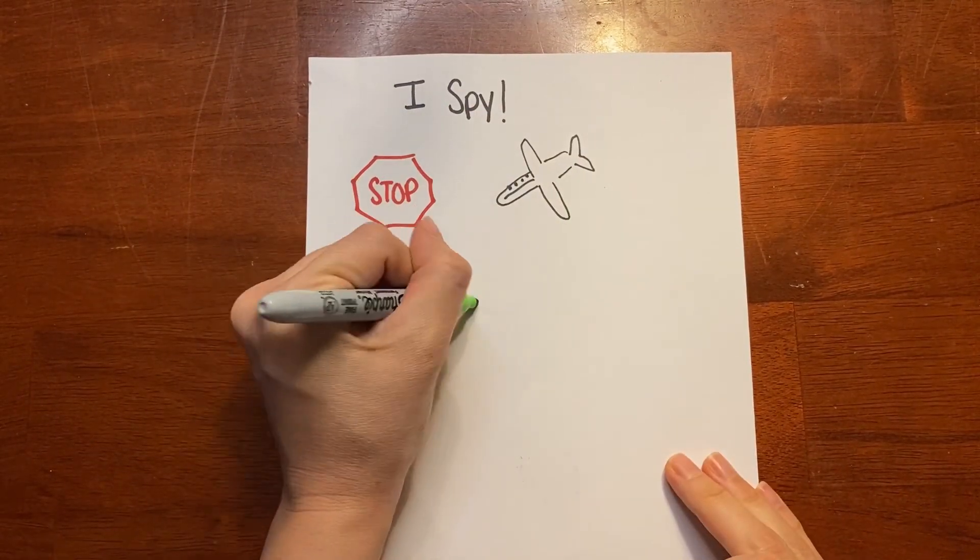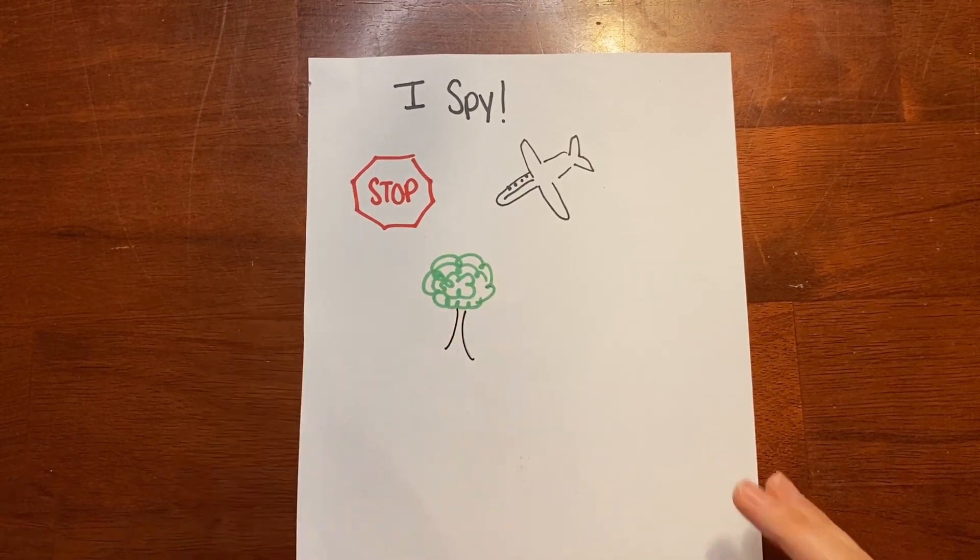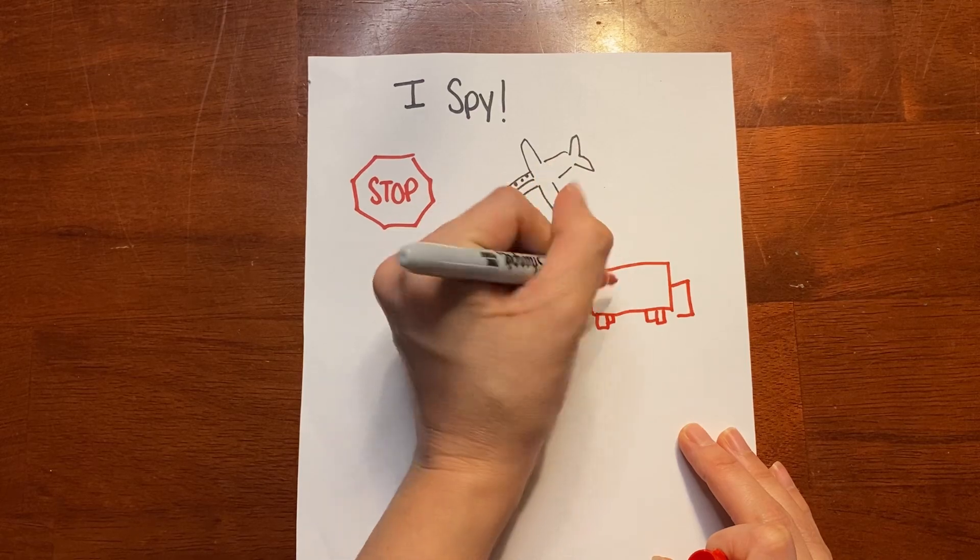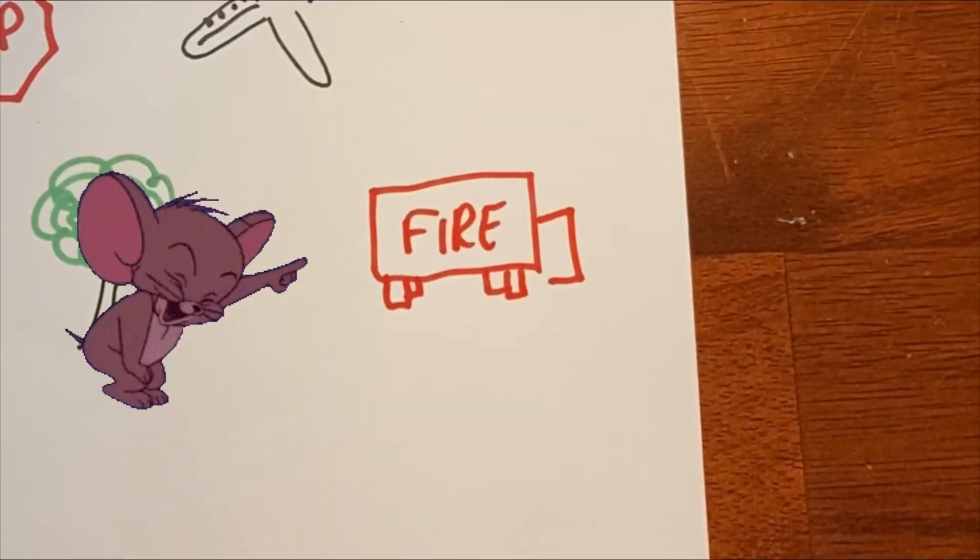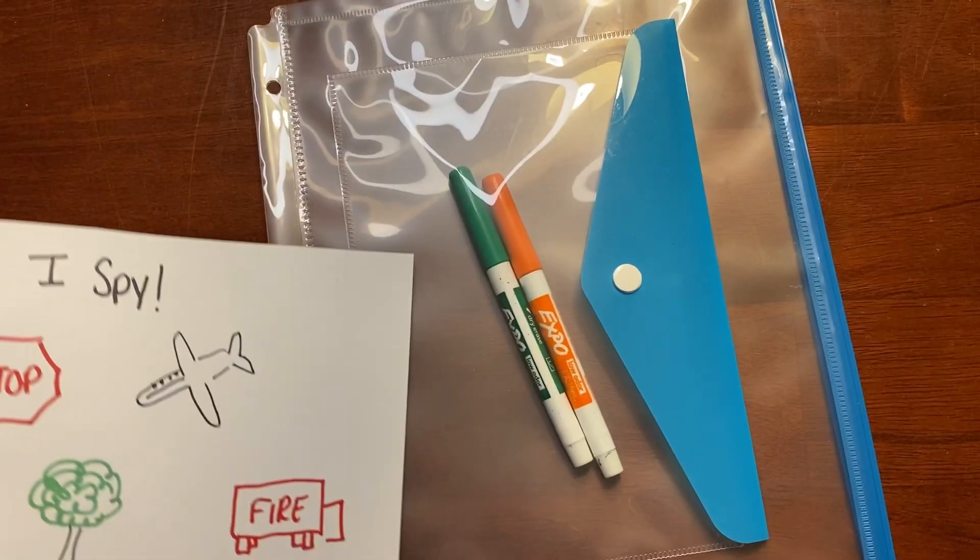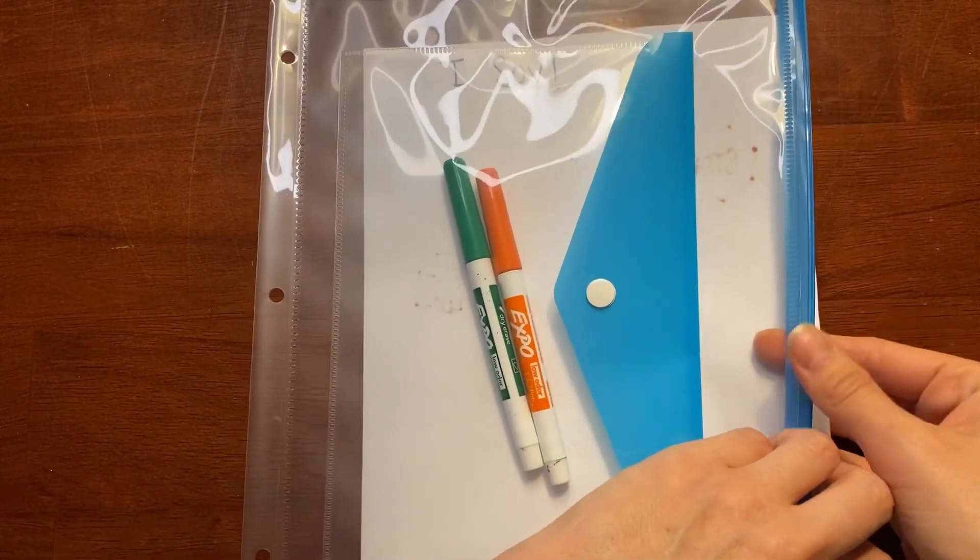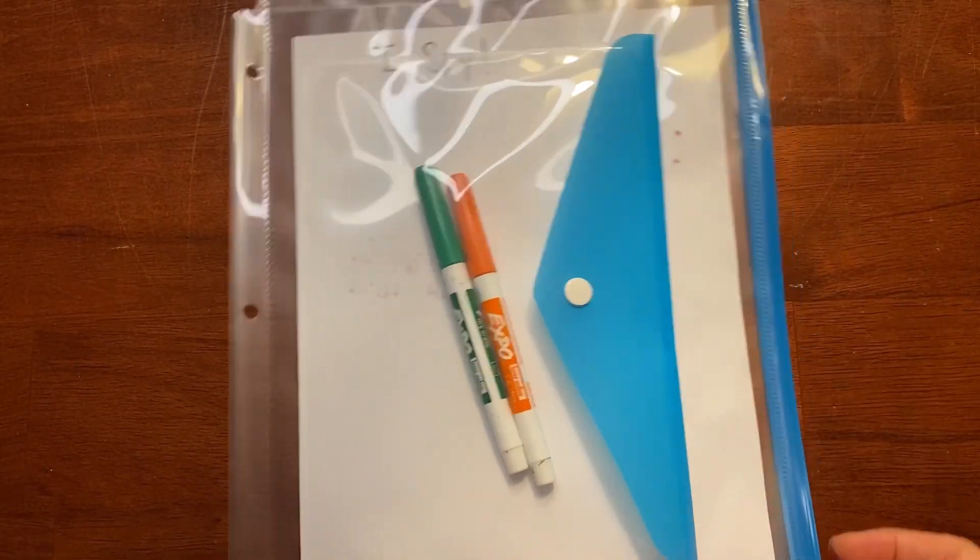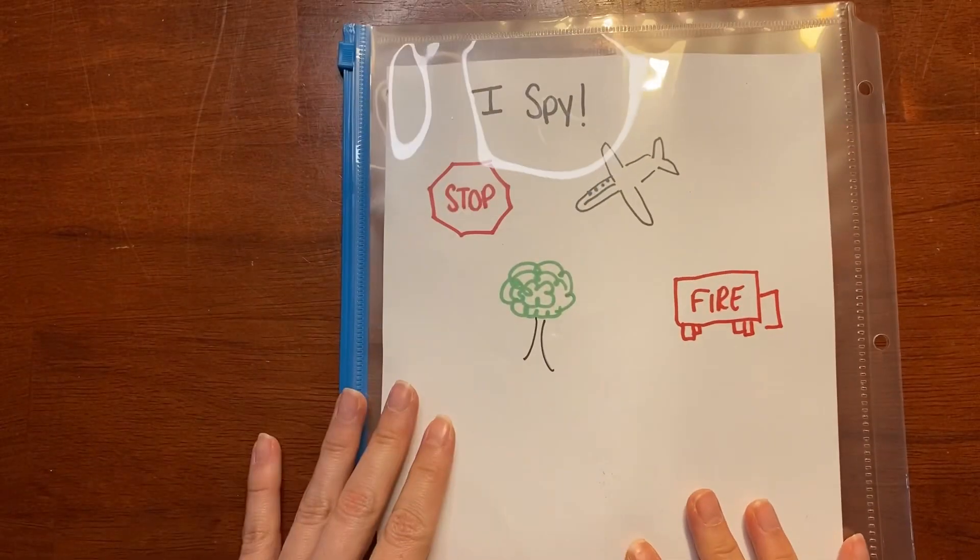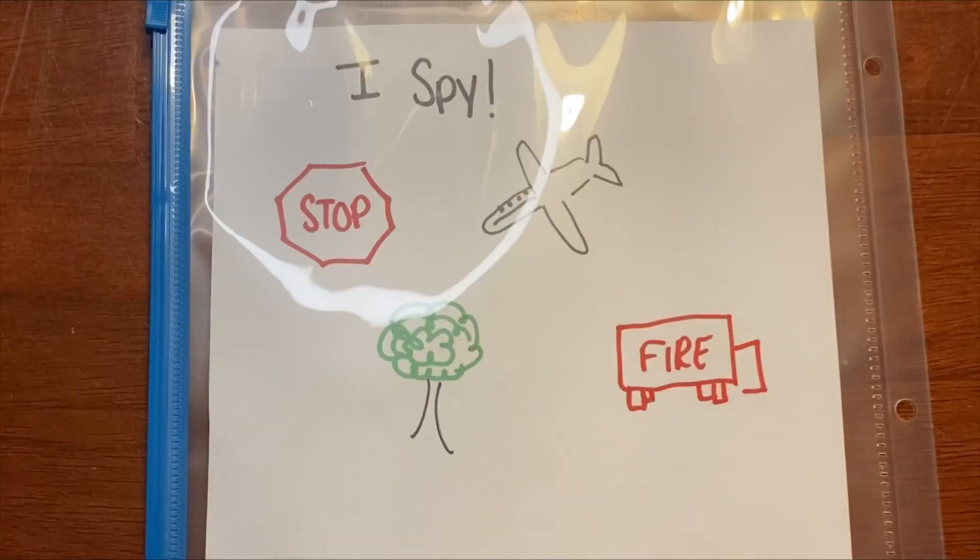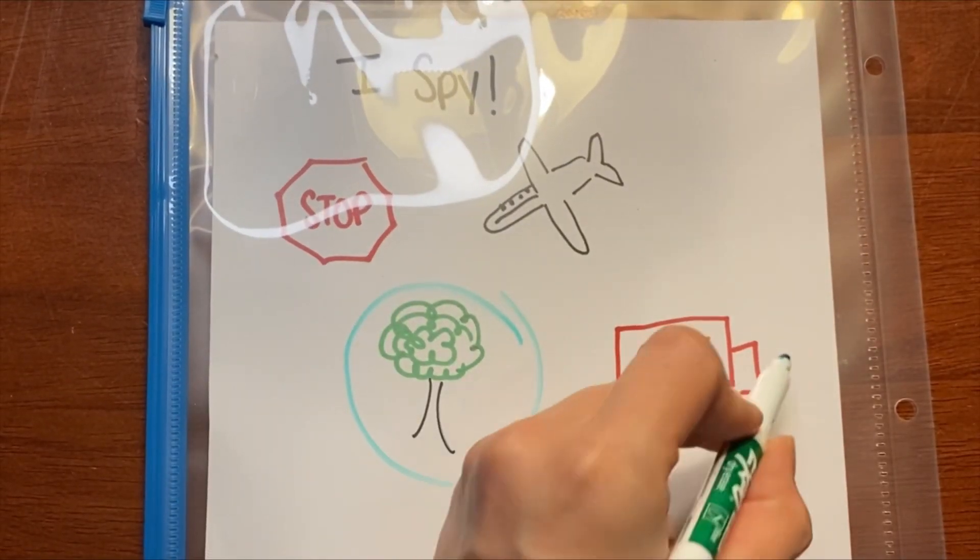The first hack is to play I Spy with your kids. If you're going on a road trip, you can draw the items you're going to see or you can have your child draw the items because clearly I am not good at this. And then you are going to stick it right into the pouch. It zips right up. And as they see the items and you're driving along, they can use the markers that are in the back of their pouch to circle what they see.